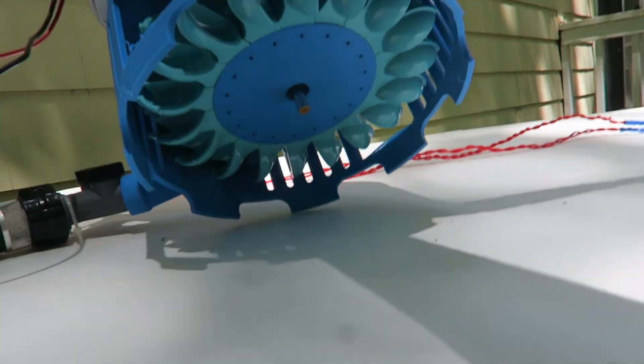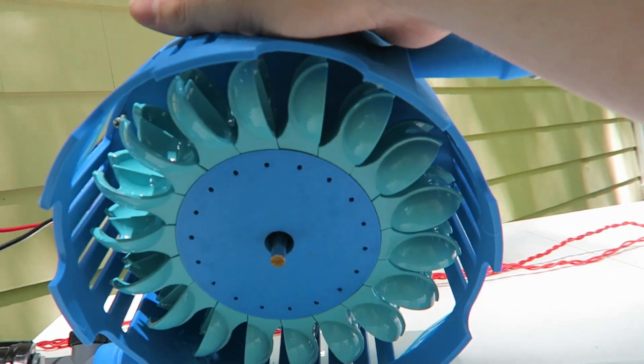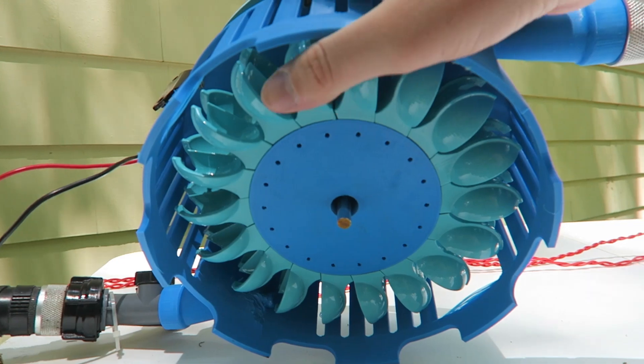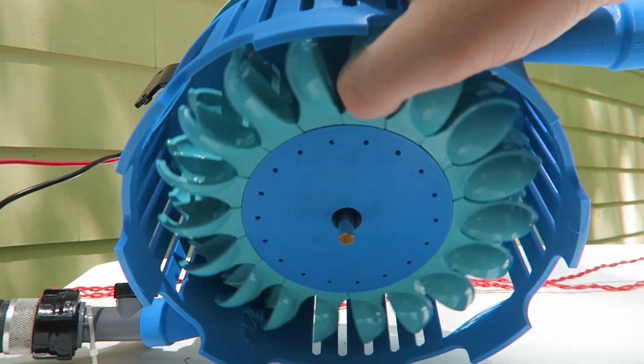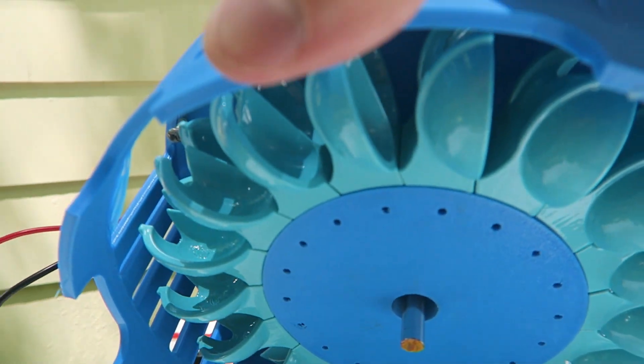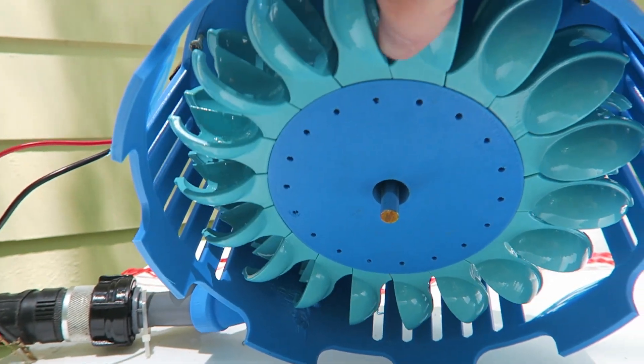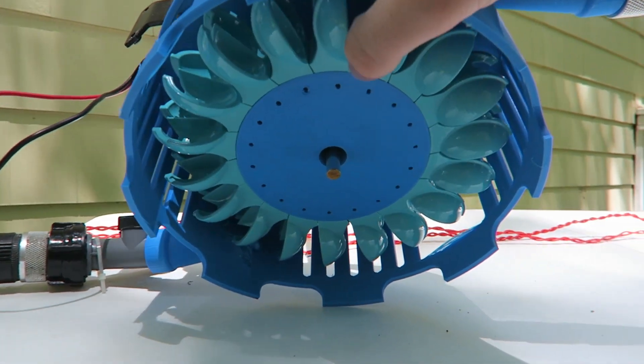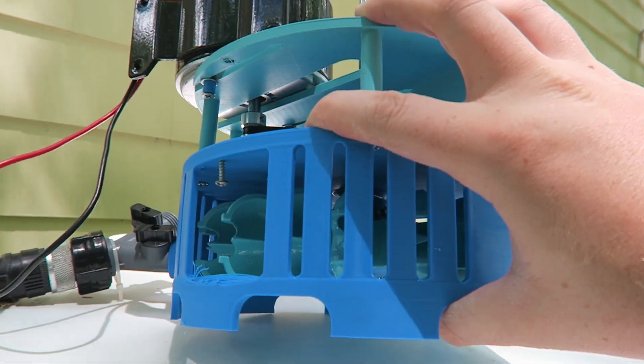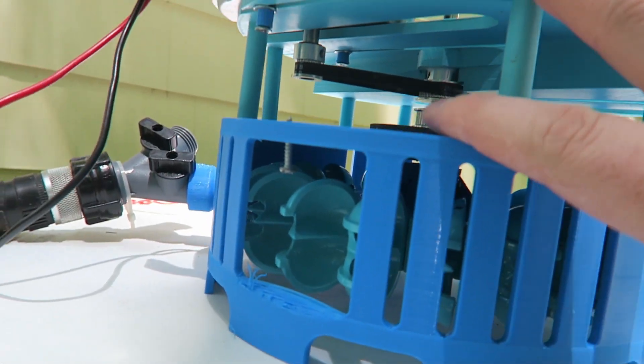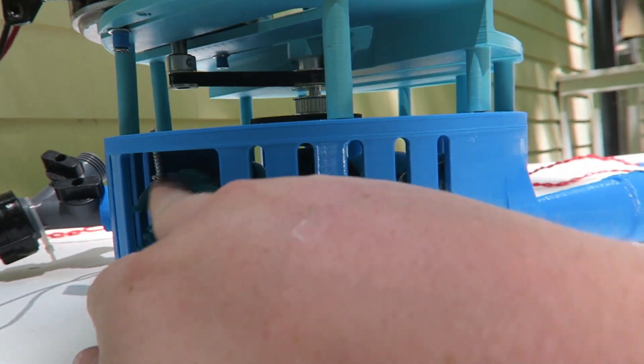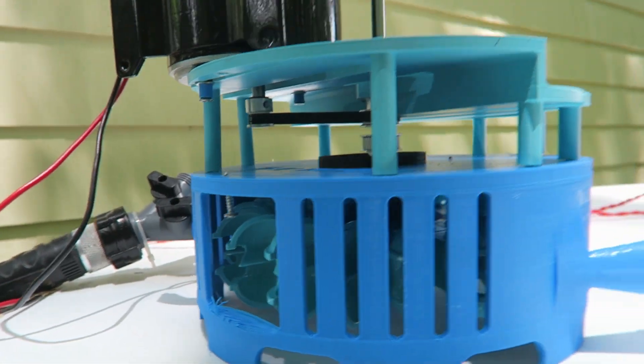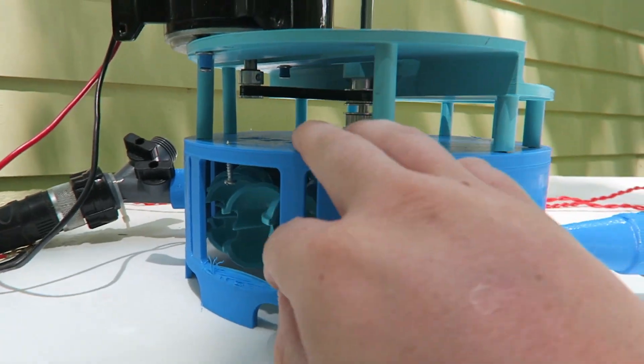After that you have the actual Pelton buckets. I think there's 18 individual buckets in here. They are ASA vapor smooth so they have as little water resistance as they can. I probably could get them a little better, but they've worked pretty well for this application.